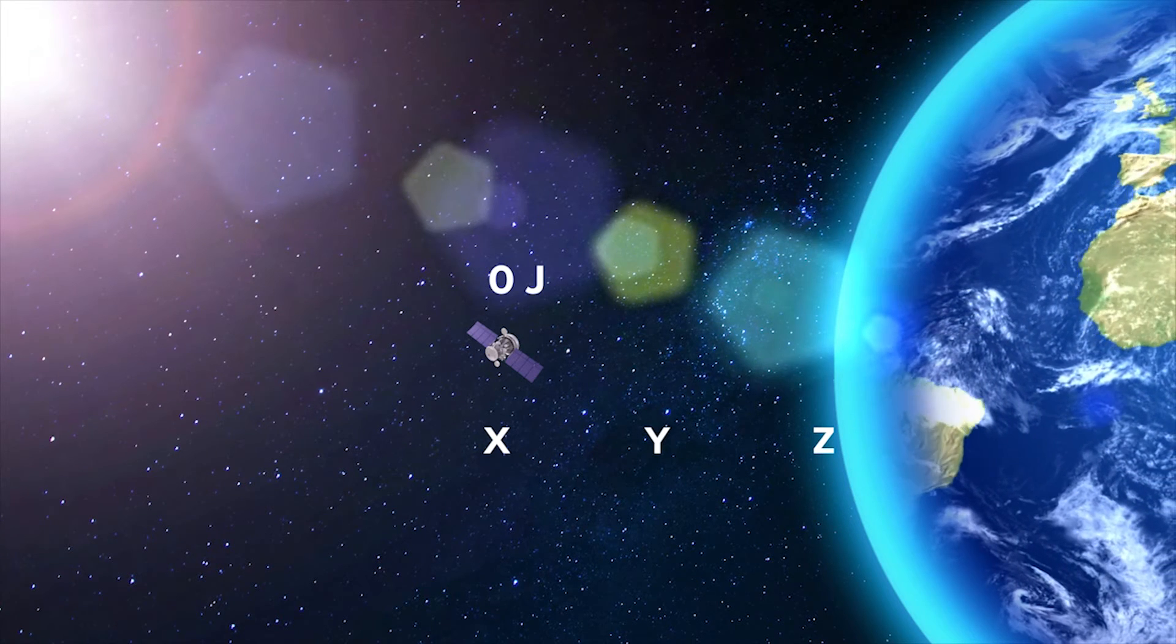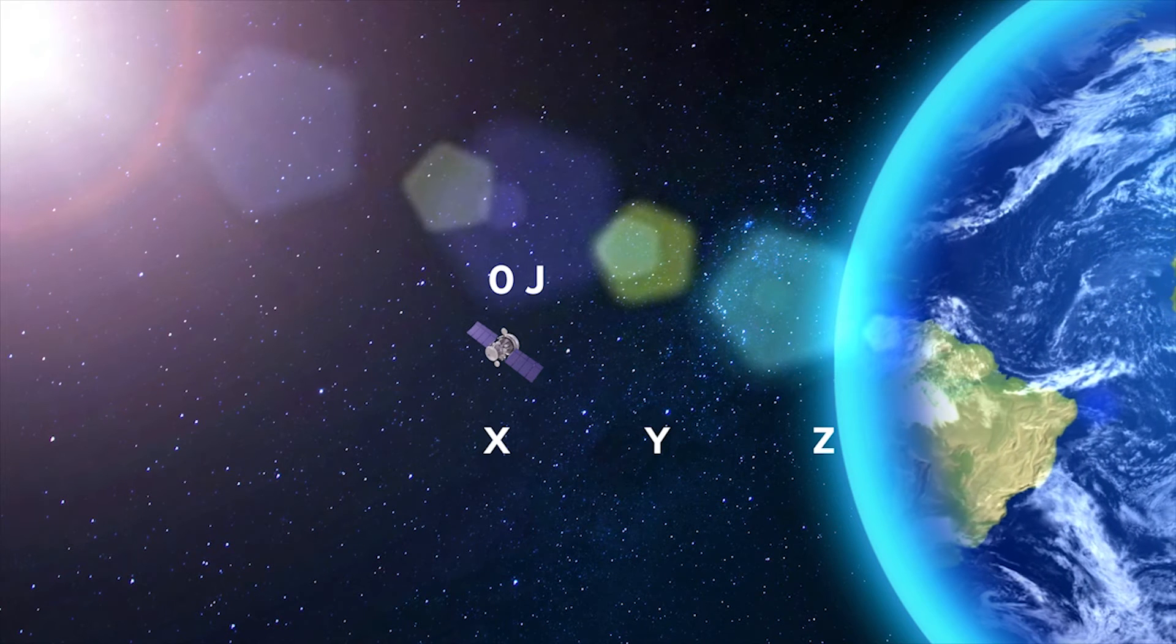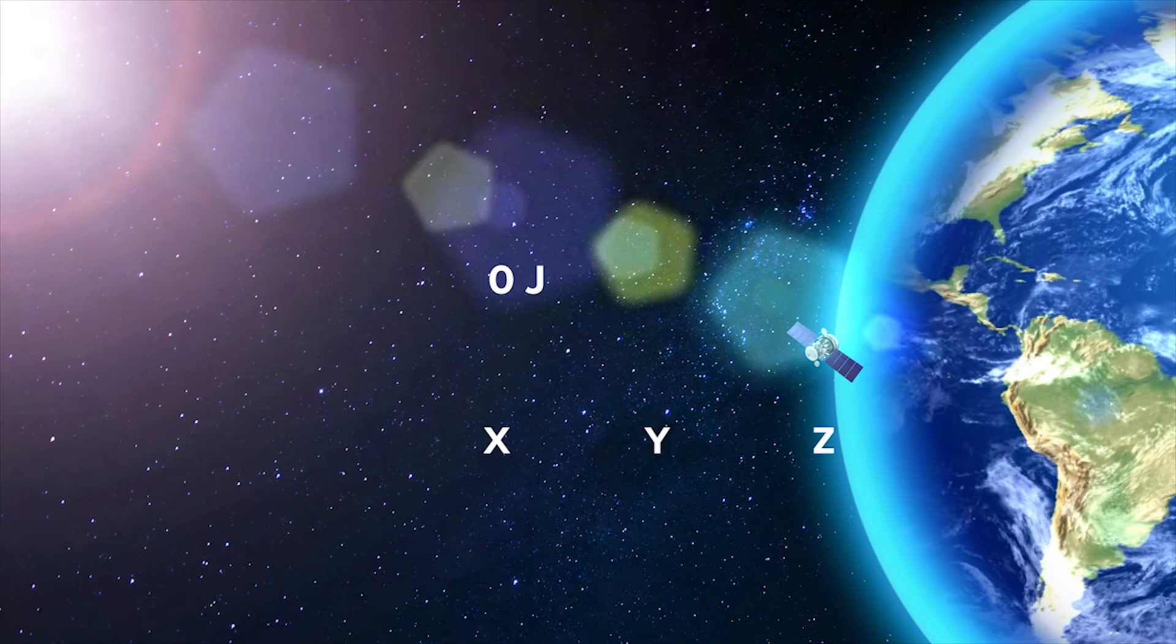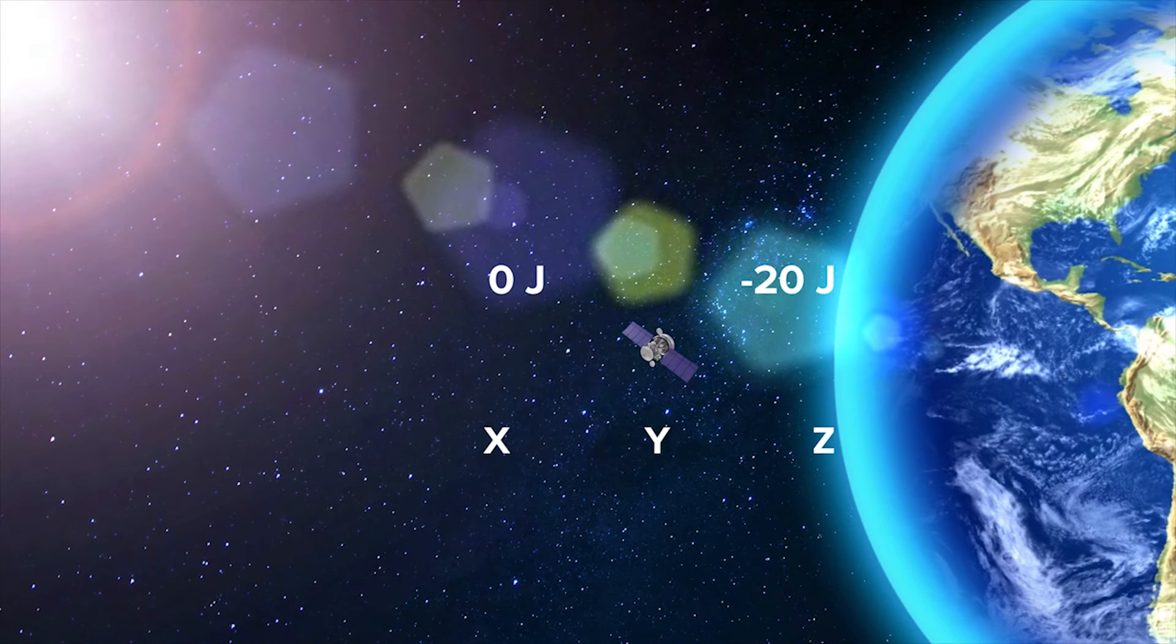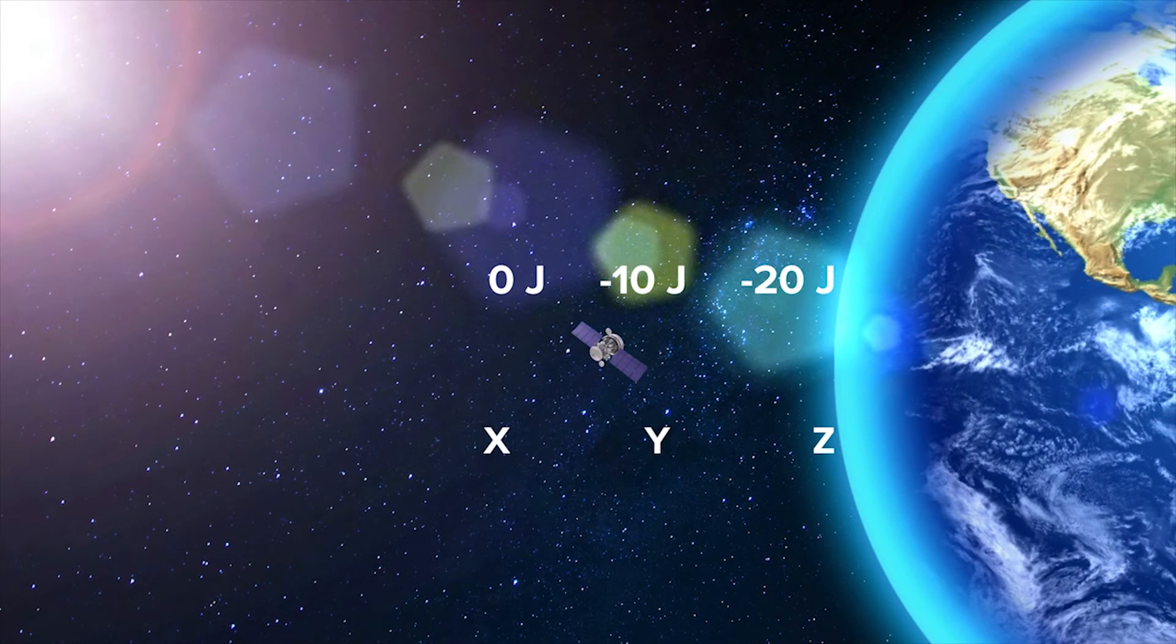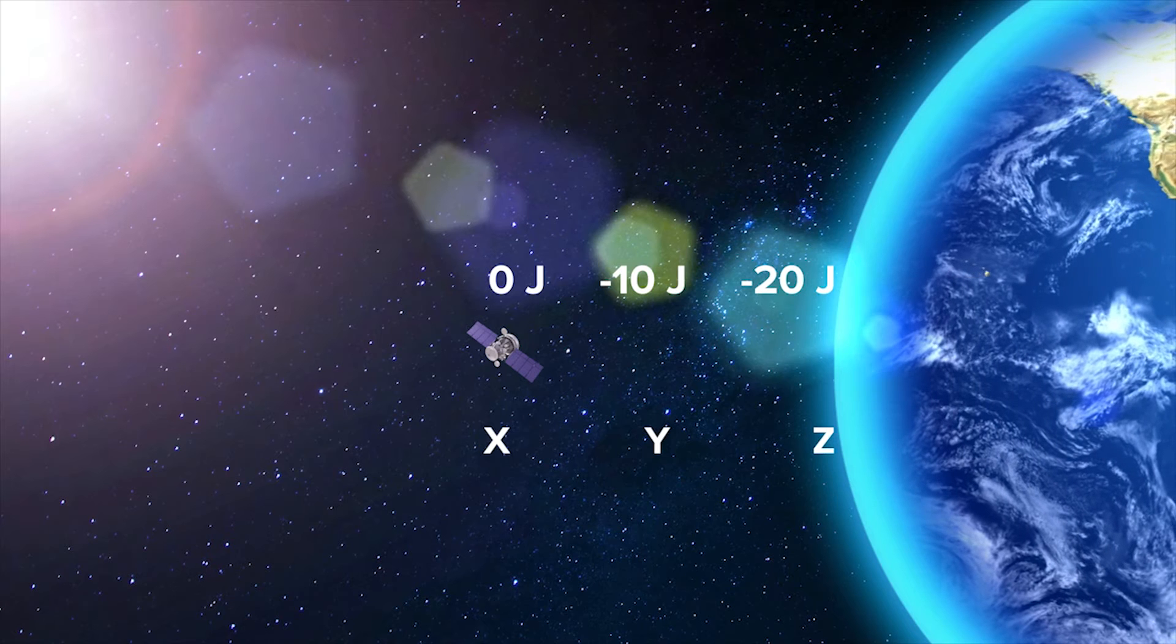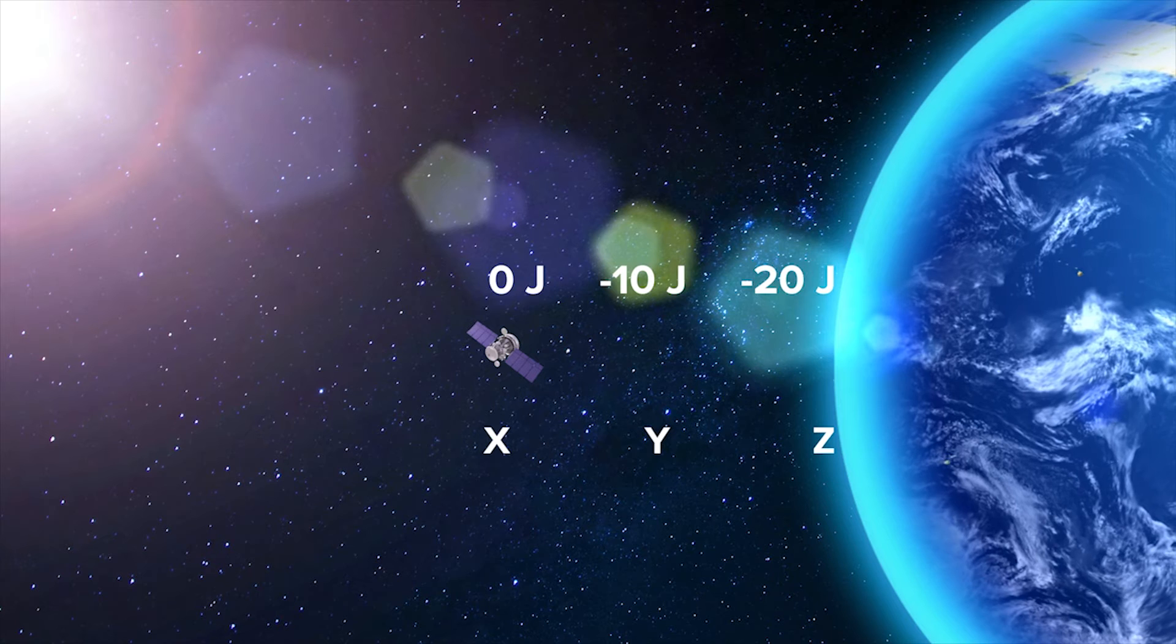Mathematically, gravitational potential energy is described using negative values. If we revisit the issue at point Z, gravitational potential energy may be minus 20 joules. At point Y, gravitational potential energy may be minus 10 joules. At point X, furthest from the centre of mass, gravitational potential energy will be approaching zero. This means that gravitational potential energy is always a negative number.